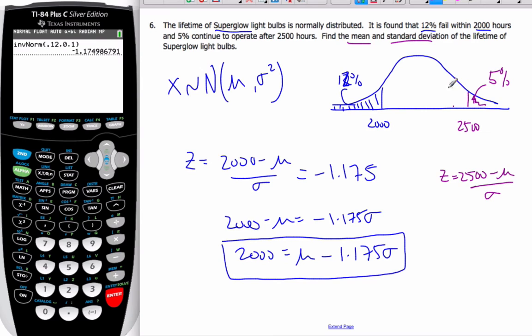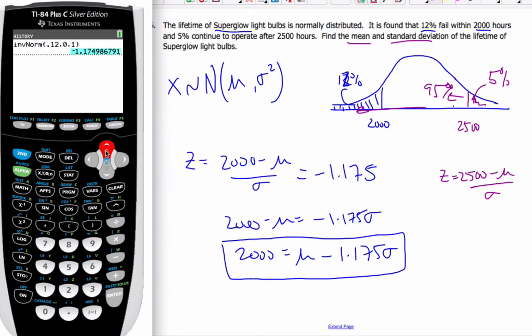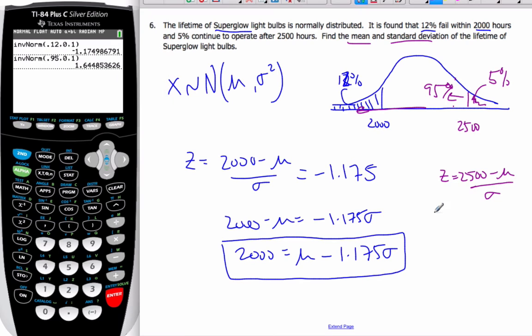And this area, if this is 5%, this area over here all the way to the end is 95%. So if I go back to my inverse normal, I get 0.95, and that gives me equals 1.6449.